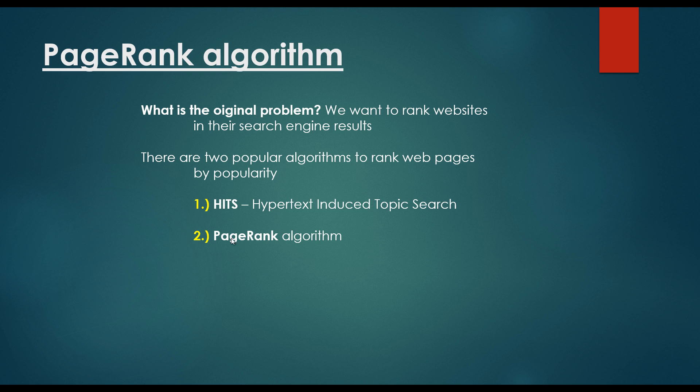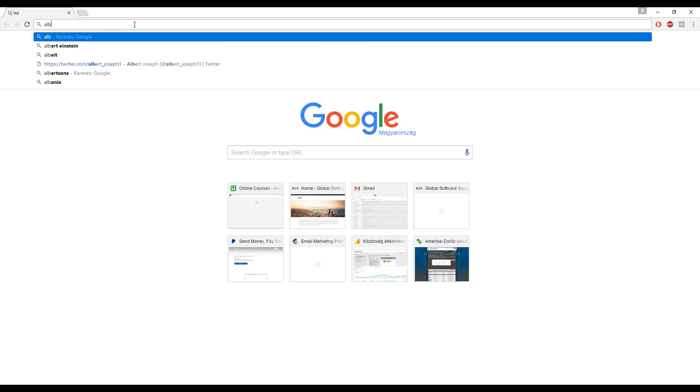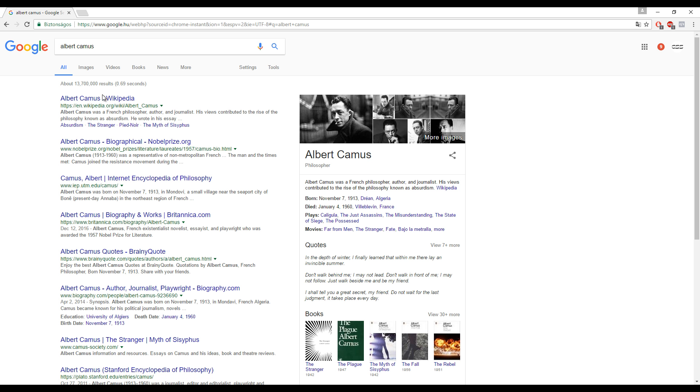What is Google PageRank? First of all, what's the original problem? We want to rank websites in their search engine results. So, for example, we are looking for Albert Camus, and we hit enter, and these are going to be the results as you can see - Wikipedia, BiographicalNoblePrice.org. And of course, we can pose the question that what's going to determine this given order, and basically the PageRank algorithm itself.